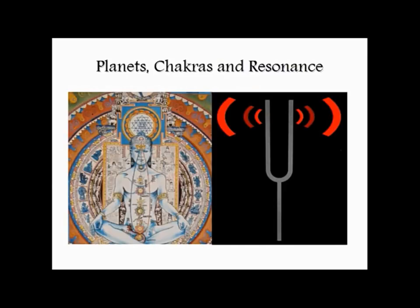Now I want to give you a description of what I understand to be something like the mechanism whereby astrology works. You've heard of chakras — we have these energy centers. Classically speaking there are seven major chakras and several minor chakras in different places. The word chakra literally means wheel. The chakras are said to be these spinning vortices in certain parts of the body.